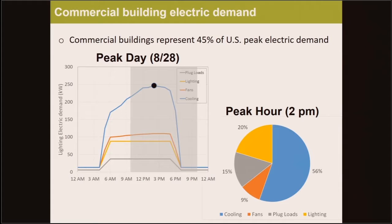Commercial buildings represent nearly half of the U.S.'s peak electrical demand. But what is that demand comprised of? To help answer that question, I developed a simple energy model using eQuest of a typical office building in St. Louis. It's 50,000 square feet, built to the IECC 2009 code, and uses packaged variable air volume systems. I wanted to illustrate how its electric demand varies over a typical day and by end use.